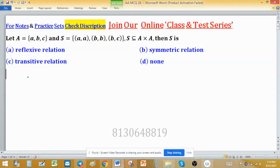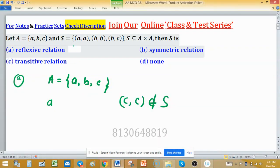Let's check option (a) first. Set A contains three elements a, b, and c. For reflexive, a must be related to itself, b must be related to itself, and c must be related to itself as well. We can see (a,a) and (b,b) are in S, but (c,c) is not in set S, so the relation is not reflexive.